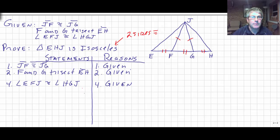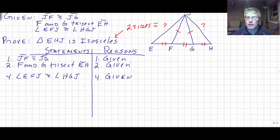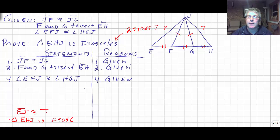Working from the bottom, our second-to-last step will be getting two congruent sides. Triangle EHJ will be isosceles if we can get EJ congruent to JH. So our last step is that triangle EHJ is isosceles, and our second-to-last step is that segment EJ is congruent to segment JH. To get those congruent, we'll probably have to prove two smaller triangles congruent, and we're well on our way with the congruent sides we have.